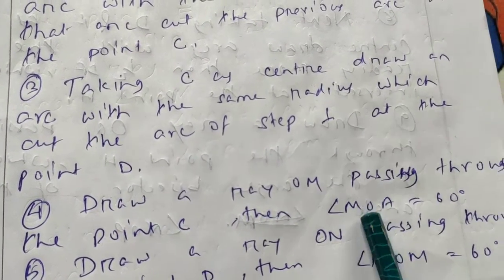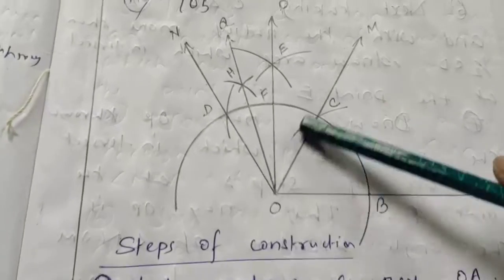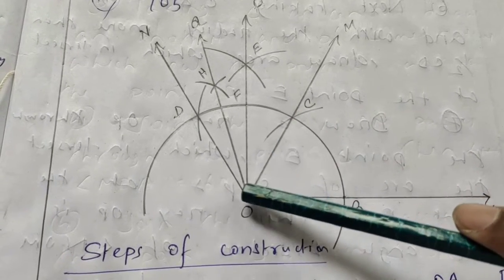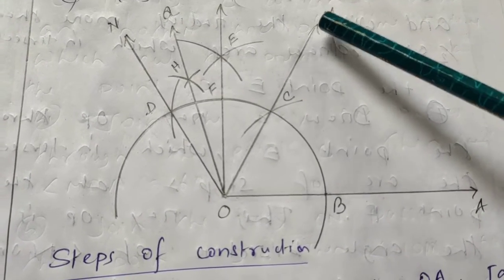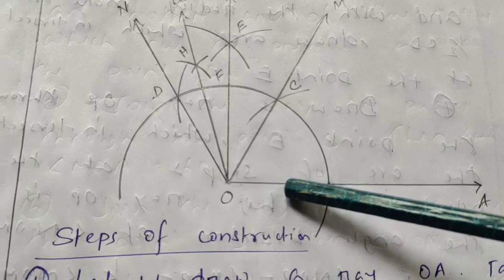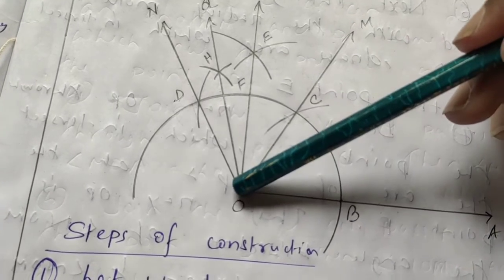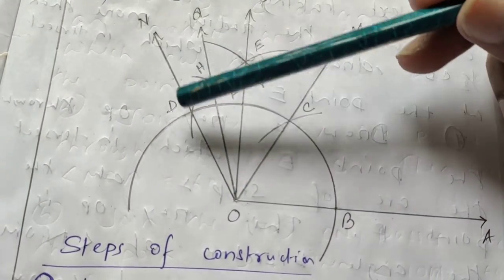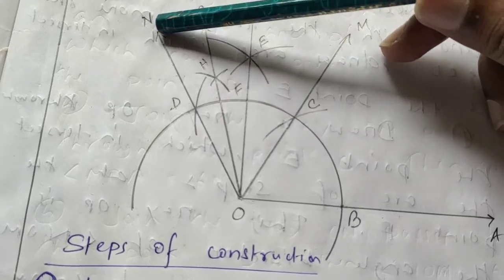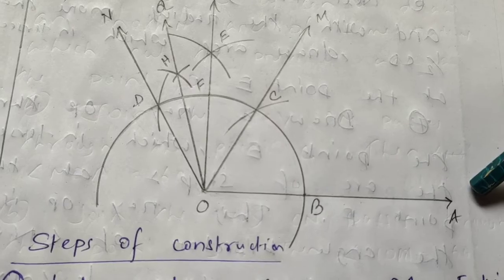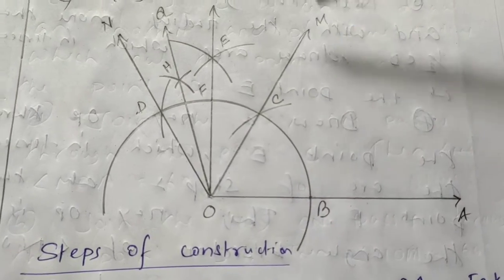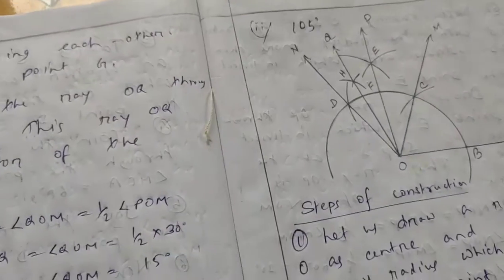Step four: draw a ray OM passing through point C. Then angle MOA is 60 degrees. Step five: draw a ray ON through point D. Then angle NOM is 60 degrees, meaning MOA is 60 degrees and NOM is also 60 degrees.